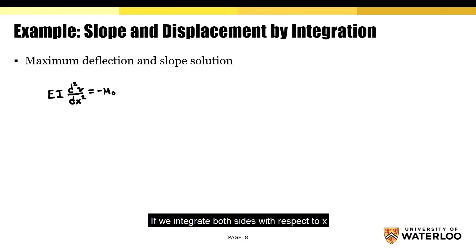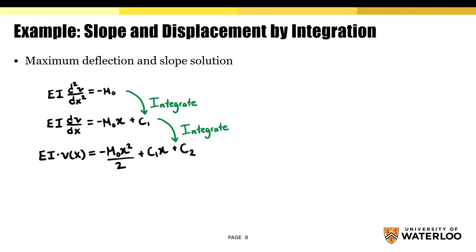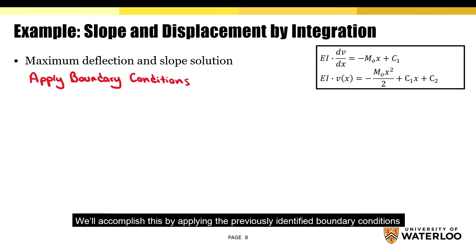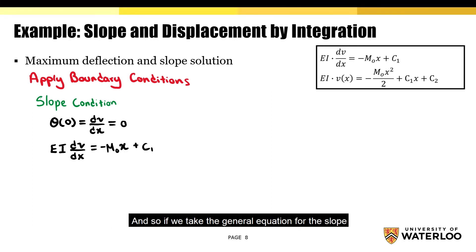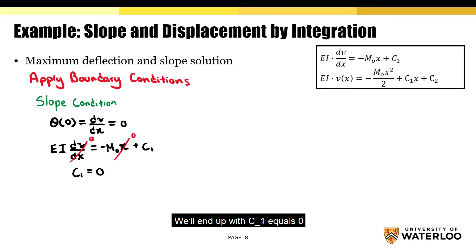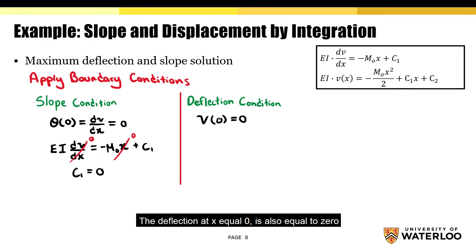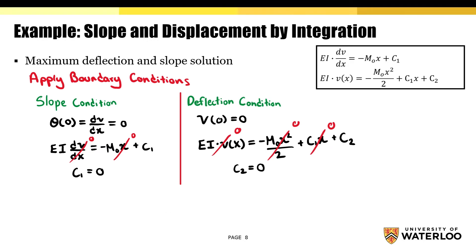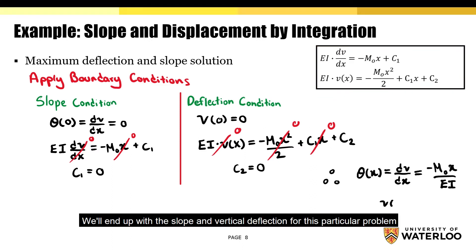We'll take the following moment equation. If we integrate both sides with respect to x, we'll end up with the general equation for the slope. Now, if we integrate each side of the general slope equation, we'll end up with the general equation for the vertical deflection. Now we'll solve for the constants C1 and C2 by applying the boundary conditions. The slope at x equals 0 is equal to 0, so plugging in those values gives us C1 equals 0. The deflection at x equals 0 is also equal to 0, so plugging in those values gives us C2 equals 0. After plugging C1 and C2 back in and simplifying, we end up with the equations for the slope and vertical deflection for this particular problem.